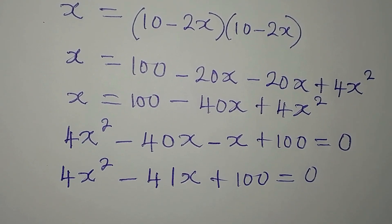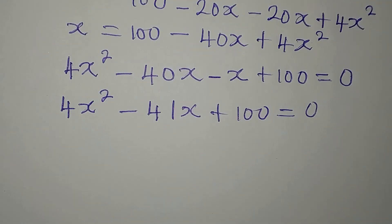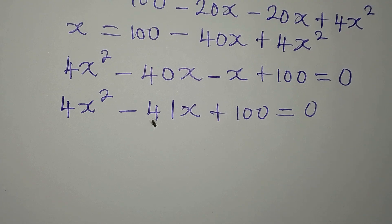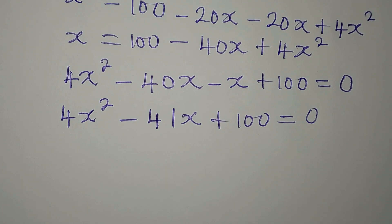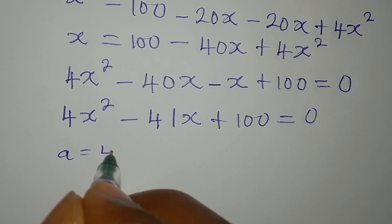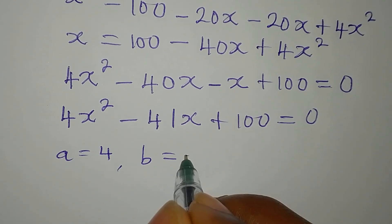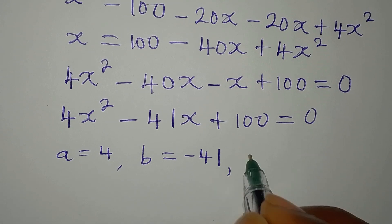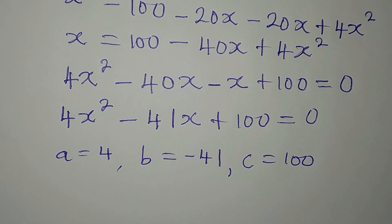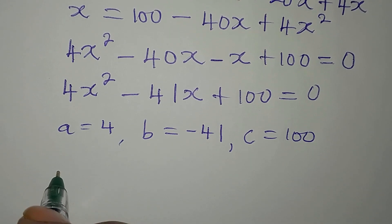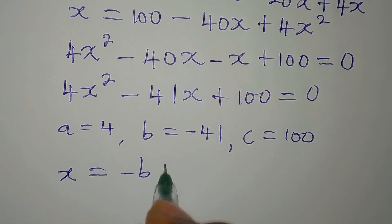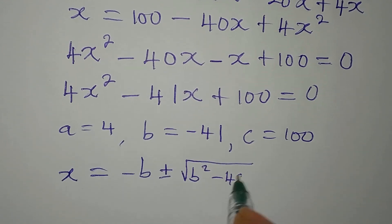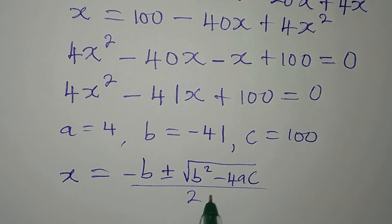This is now a quadratic equation. We are going to solve it using the formula. Our a is 4, b is minus 41 — this sign should go with your 41 — and our c is 100. The formula is: x equals negative b plus or minus square root of b squared minus 4ac, all over 2a.